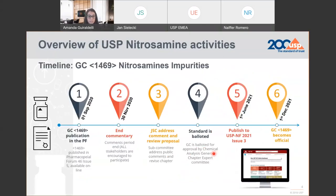This is a timeline for the general chapter publication. Last year USP published the proposal chapter in the Pharmacopoeial Forum on 1st September, and after 90 days of public consultation, all the comments were gathered and addressed by the joint subcommittee on nitrosamine impurities. After reviewing and addressing all comments, the chapter was balloted by the Chemical Analysis General Chapter Expert Committee. Recently, this expert committee approved the chapter, and it is now available in USP NF 2021, Issue 3, and will become official on 1st December of this year.